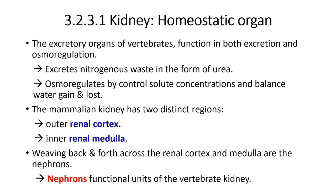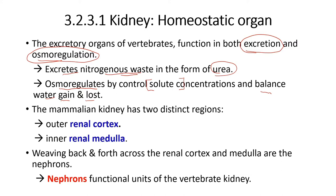In vertebrates, a specialized organ called the kidney functions both as an excretory organ and in osmoregulation. Osmoregulation involves controlling solute concentration and balancing water and ion flux. The kidney is divided into two regions: the outermost layer known as the renal cortex and the inner renal medulla.